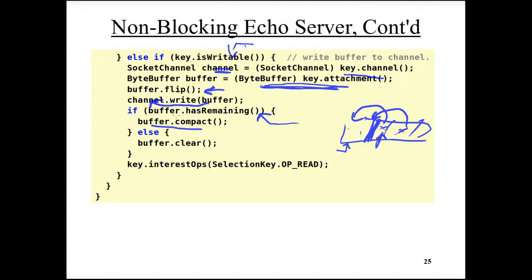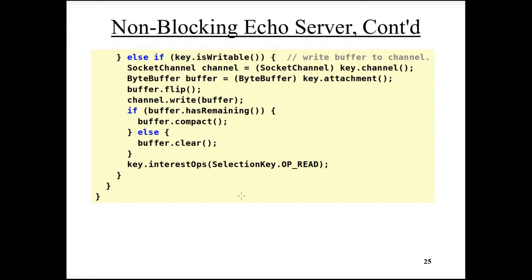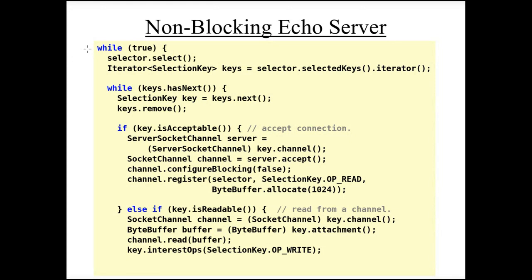If there is no remaining data in the buffer, all data was sent. We clear the buffer, resetting all pointers so next time writing starts from index zero. Now we are interested in reading again — we have echoed the message back and do not want to echo it again. This single thread performing IO continuously loops, and whenever something can be performed the select method returns. It then iterates over all channels on which non-blocking IO can be performed — a new connection, a received message, or an echo back.